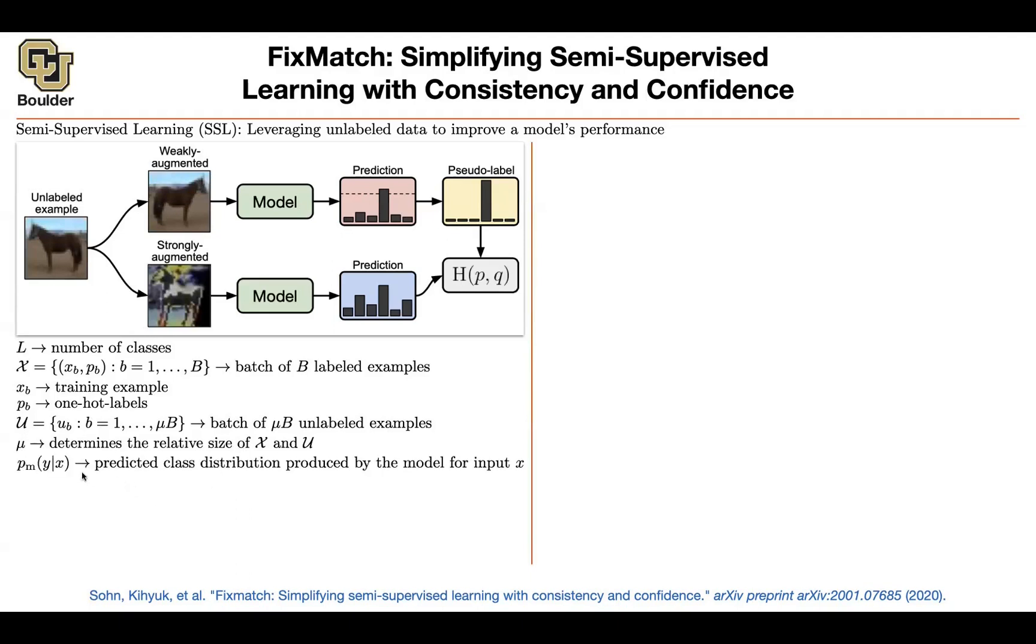You have a model which takes as input an image and outputs a distribution over labels. H is the cross entropy. There's a strong augmentation strategy, let's denote it by capital A. And by strong, these are coming out of AutoML.